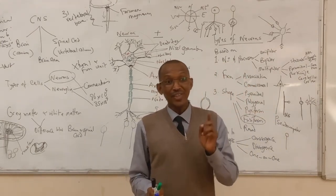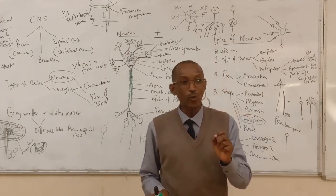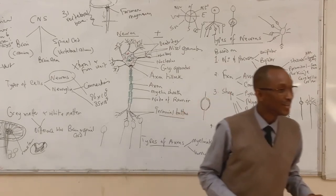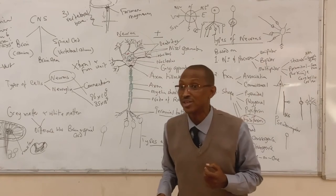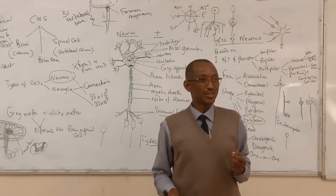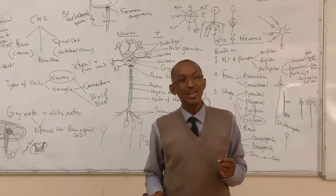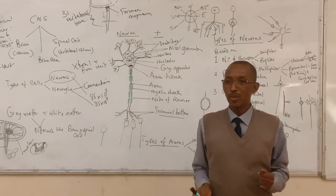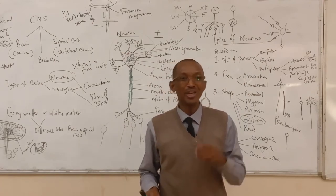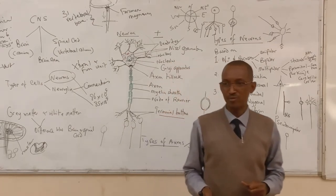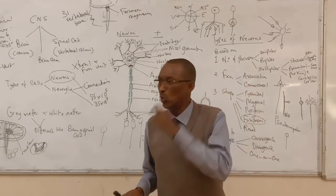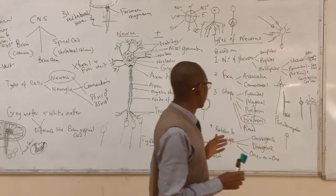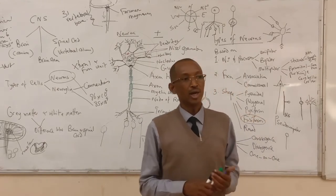There is also a one-on-one type of synapse, where only one neuron synapses with another single neuron. This is peculiar to important stations, such as in the retina, where precise, dedicated connections are critical — given how vital vision is. With that, we will take a break now and then come back to continue with another section.